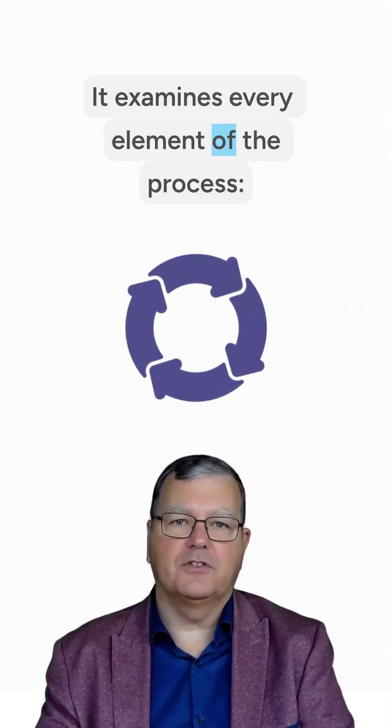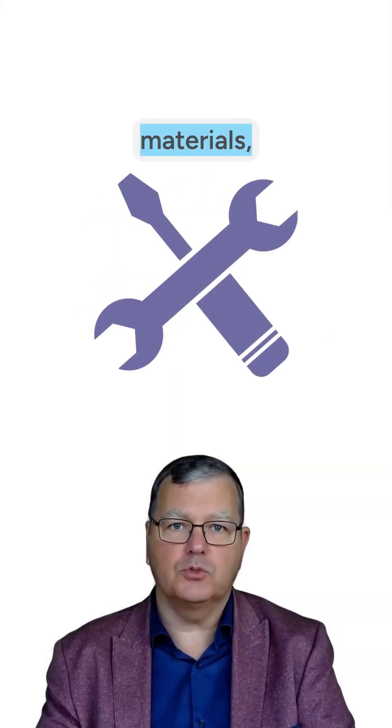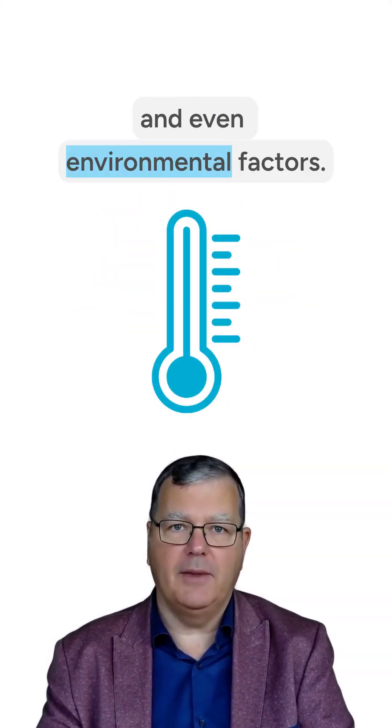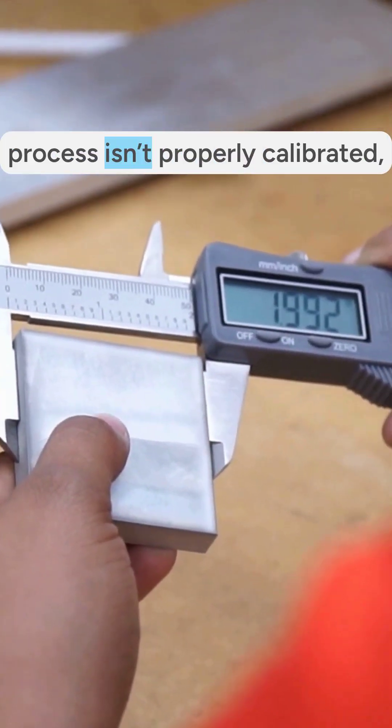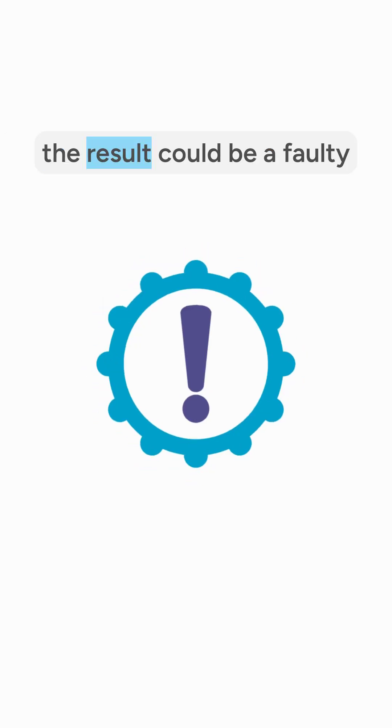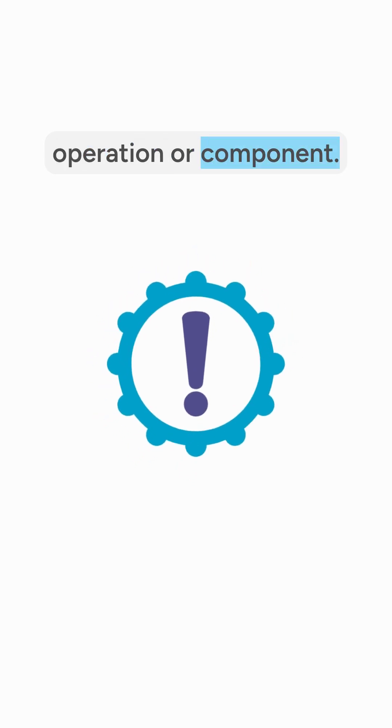It examines every element of the process: people, tools, materials, equipment, and even environmental factors. For instance, if a critical tool in the process isn't properly calibrated, the result could be a faulty operation or component.